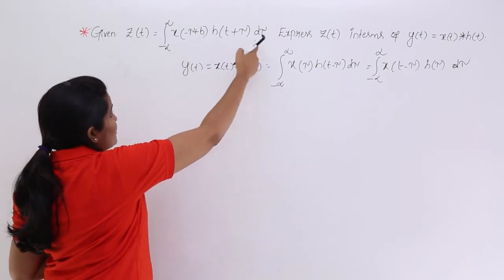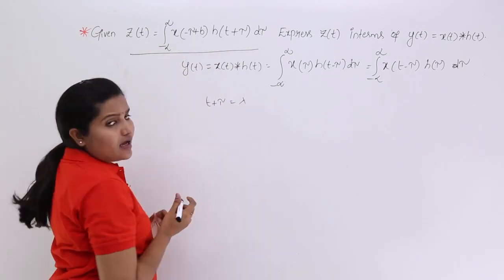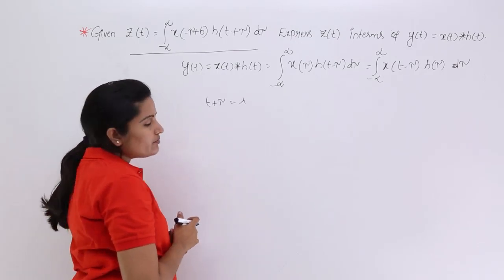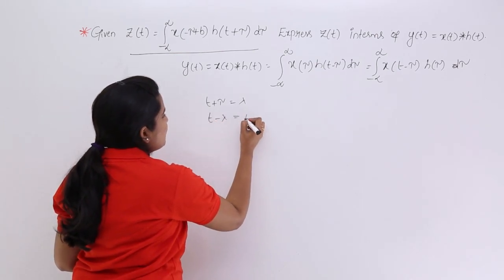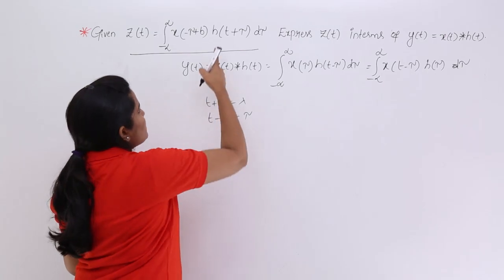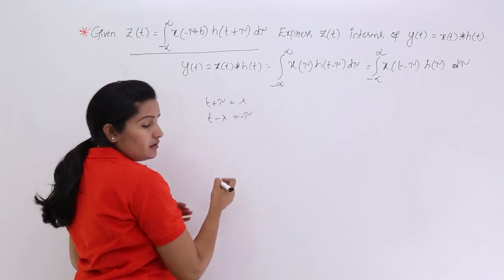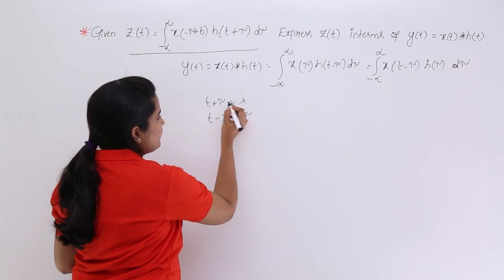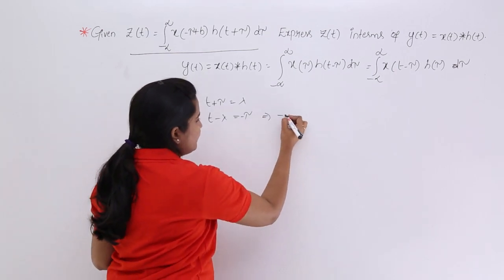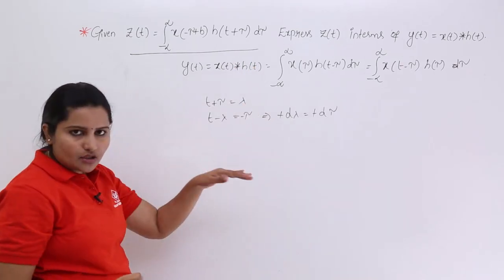Now in this Z of t equation, I am going to consider t plus tau equal to some lambda. So t minus lambda is equal to tau, meaning t minus lambda equals tau. Since tau is a varying time factor, if we differentiate: t plus lambda — sending lambda to one side gives t minus lambda equal to minus tau. Differentiating, minus d lambda equals minus d tau, so minus minus cancels: d lambda equals d tau, or d tau equals d lambda.